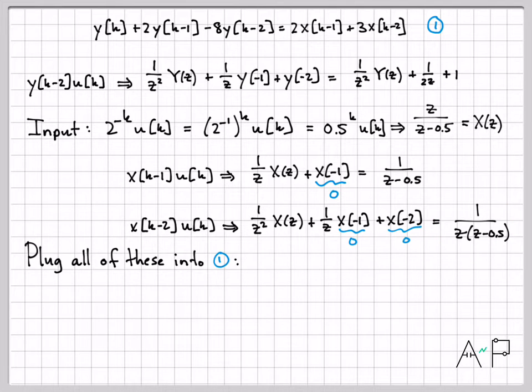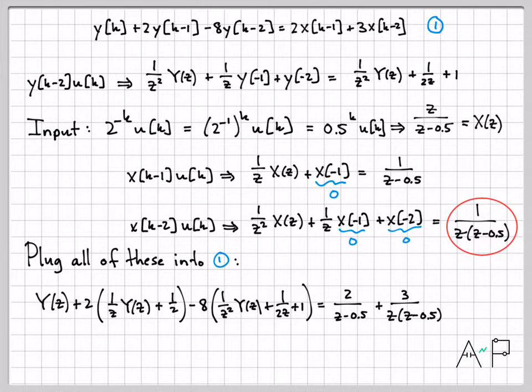Alright, so now I know what every term in equation 1 is in the Z domain. Let's plug all of those into the equation. So I get Y(z) plus two times the quantity from the previous chart minus eight times the quantity we had on the previous chart equals two times this quantity right here plus three times this quantity. So at this point, we have gone into the Z domain. The rest of this video now is really just a lot of algebra. We need to do symbolic manipulation and rearrange things to solve for what we're looking for. We'll go through this a little quick. You can pause as needed to make sure that the algebra looks good, but it's really just high school algebra.